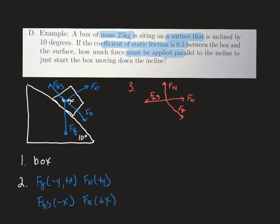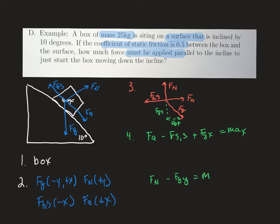Step four is to write Newton's second law. Starting with the x direction: force applied minus the static friction force, plus the x-component of gravity — which is in the same direction as the applied force. For the y direction: force normal minus the y-component of the force due to gravity, which is negative because it points down.